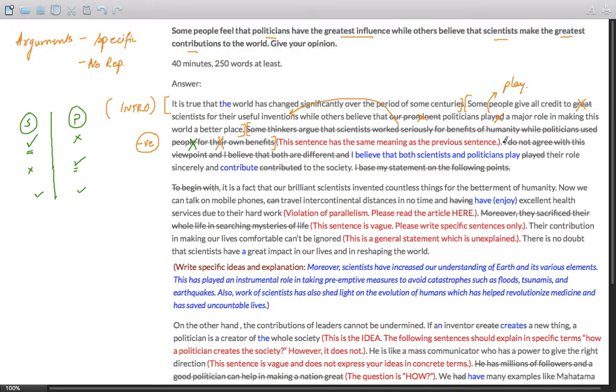And let me, yeah, I do not agree with this viewpoint. There is no need of saying I do not agree. Simply switch to I believe. The question nowhere says what you do not believe. The question says give your opinions. What do you think? What do you believe? Not what you do not believe. So I believe that both play an important role. Here you had used a past tense - contributed, played. These are past forms of the verb. They need to be avoided. Next thing is, I base my statement on the following points. Of course, it is obvious that in the body paragraphs you will discuss whatever your opinion is. There's no need of writing this. It does not convey any meaning. So arguments have to be specific and there are no repetitions. We have tried to avoid repetitions over here and try to be specific by eliminating things which are not required at all.